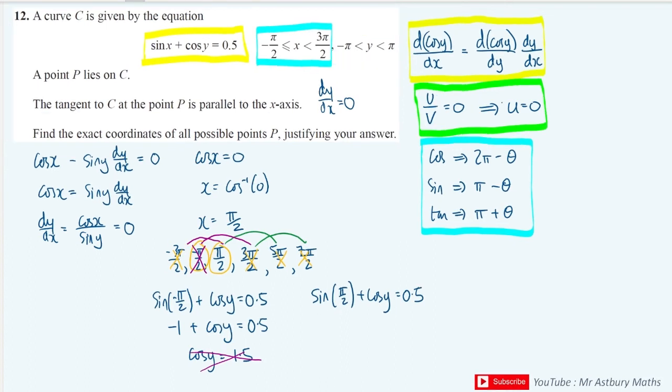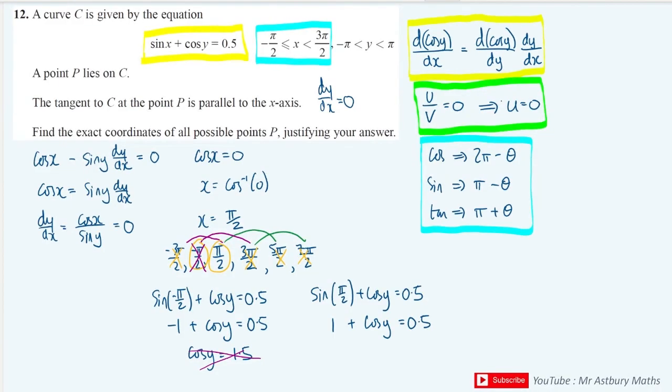Over here, this is equal to 1. Sine of pi over 2 is equal to 1. So I get plus cos y is equal to 0.5. This gives me that cos y is equal to minus 0.5. Let's find the value of y then.